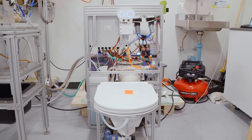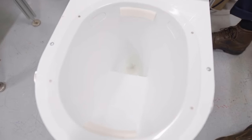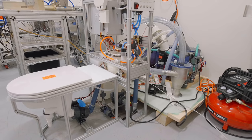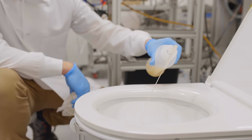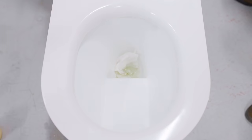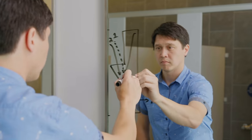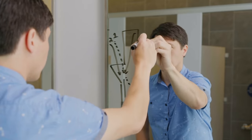The reinvented toilet we have has kind of two parts: a front end, which is just like a regular toilet, and a back end where all the processing happens. You do your business in the front end, urinate, defecate, and then we actually separate those streams after you flush it. So the feces goes one way. The urine and flush water goes another way.